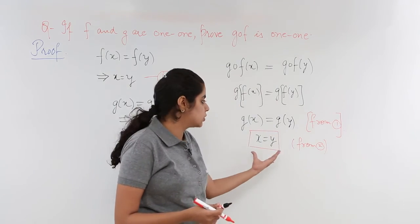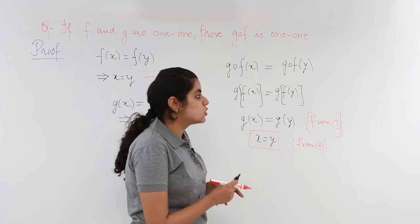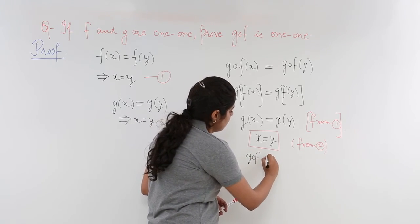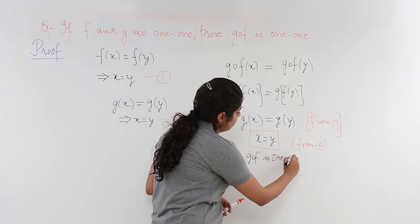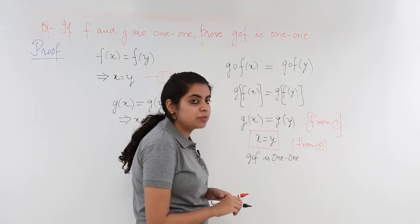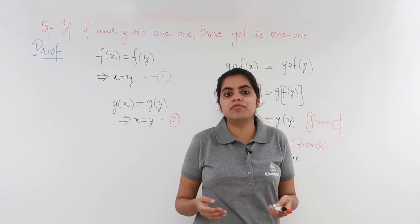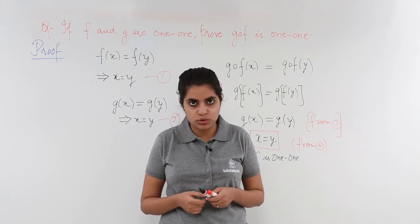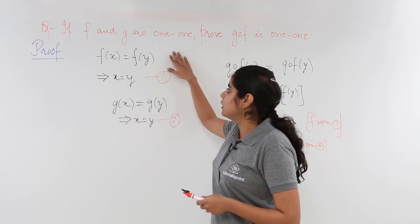Since we started with a function and we reached the conclusion that x and y are equal, so gof is one-one. Let me repeat what we did in this question. We were given f and g as two functions which were one-one, and we had to prove that gof is also one-one.